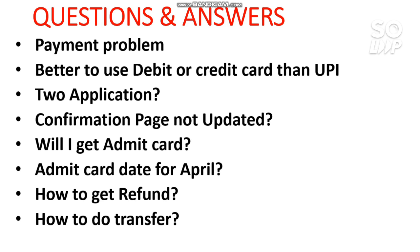For transfer — it's very simple. If you want to transfer from April attempt to May attempt, just untick April and take the May attempt, and your money will be transferred. For the refund date — you will get the refund only after the correction window for the May attempt closes. You will not get any message from NTA before the refund, but during the refund you will get an email saying your refund has been processed. You will get your money back in the original payment method used during payment — you cannot change that payment method.